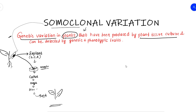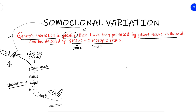This is somaclonal variation from somatic cells. There are variations in the original process. We need to find the causes. We know the causes, and these variations can be detected by genetic and phenotypic traits. Genetic traits involve genes; phenotypic traits involve morphology.